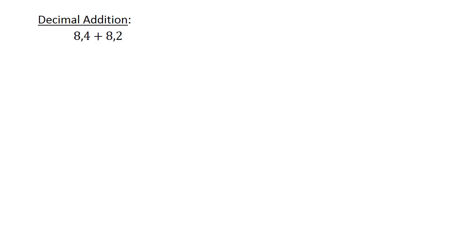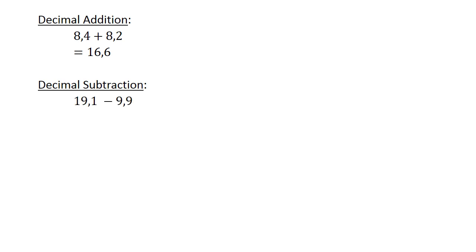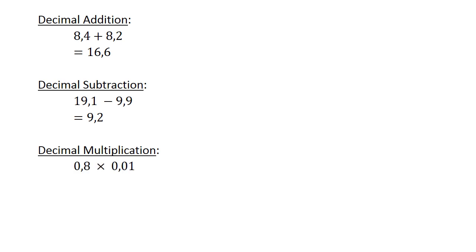Decimal addition: 8.4 plus 8.2 equals 16.6. Decimal subtraction: 19.1 minus 9.9 equals 9.2. Decimal multiplication: 0.8 times 0.01 equals 0.008.